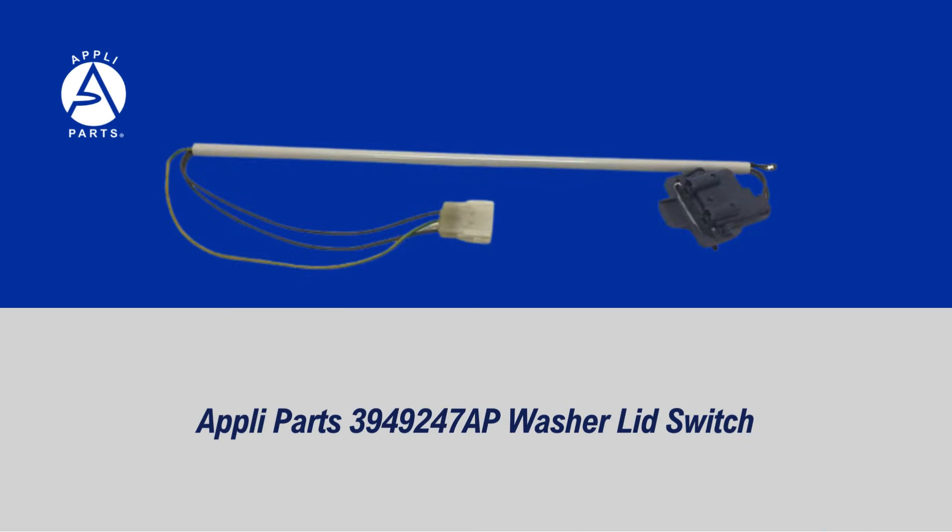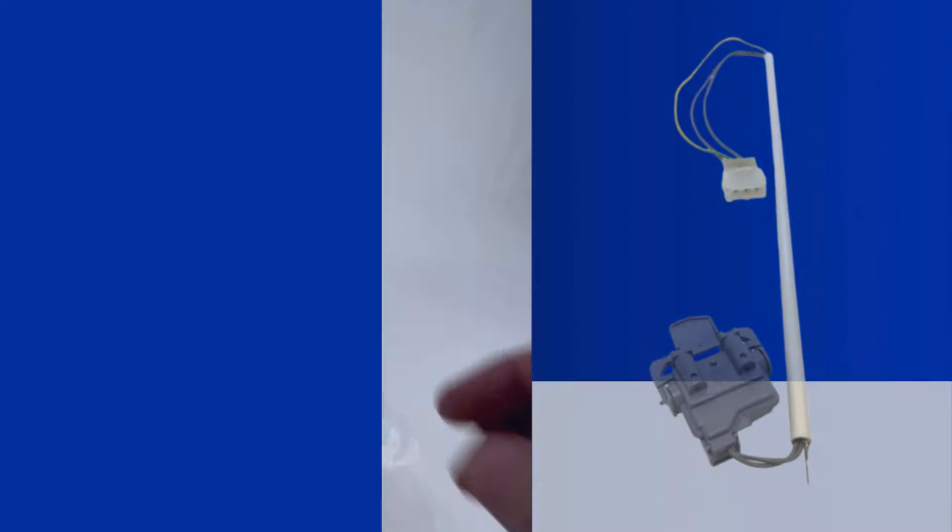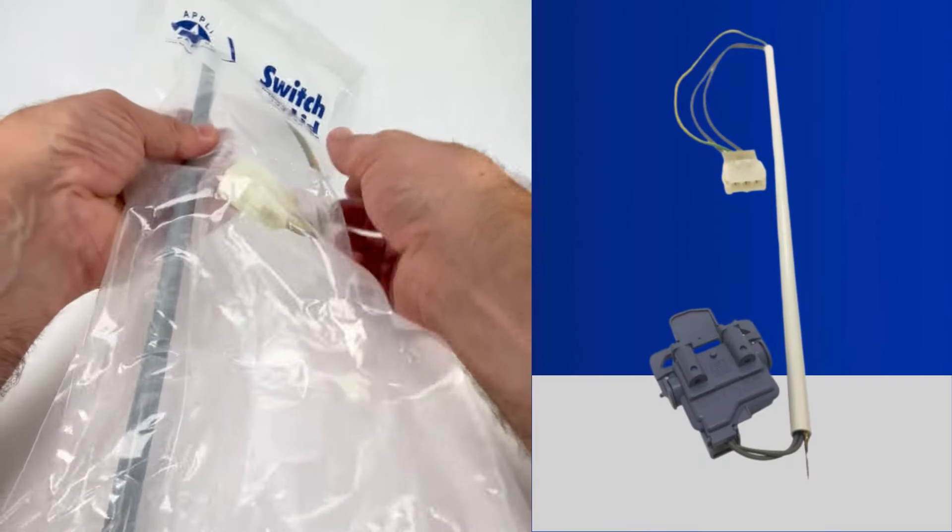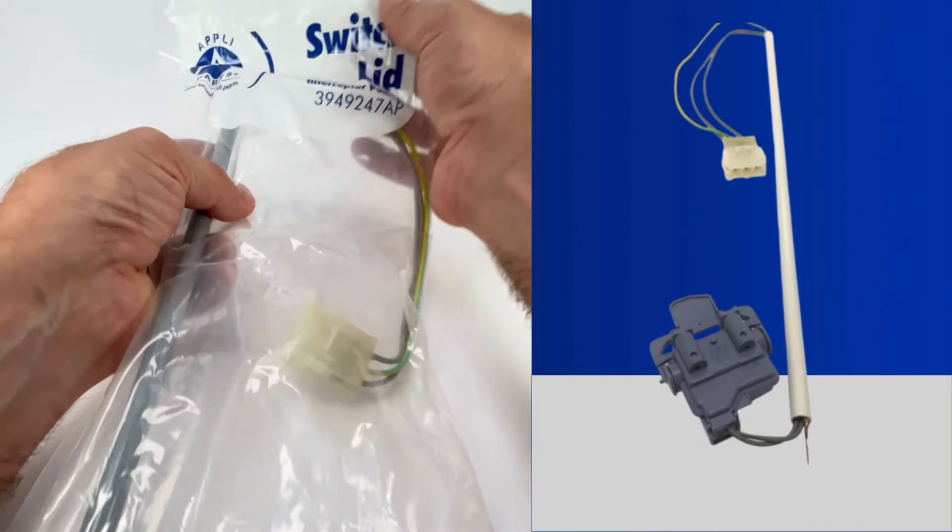Is your washing machine acting strange? Filling with water but not agitating? Maybe it agitates but won't spin? The culprit could be a faulty lid switch.